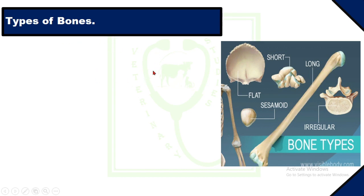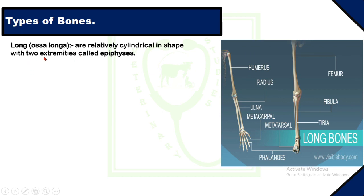There are various types of bones in the animal body: long bones, plate bones, short bones, irregular bones, sesamoid bones, and pneumatic bones found in some animals such as birds. Long bones, or ossa longa, are relatively cylindrical in shape with two extremities called epiphyses. Examples include femur, humerus, metatarsals, and metacarpals. The function of long bones is to act as levers, aiding in support, locomotion, and prehension.